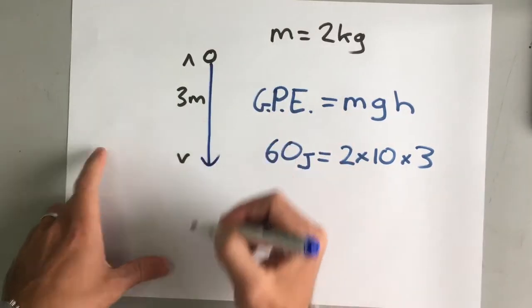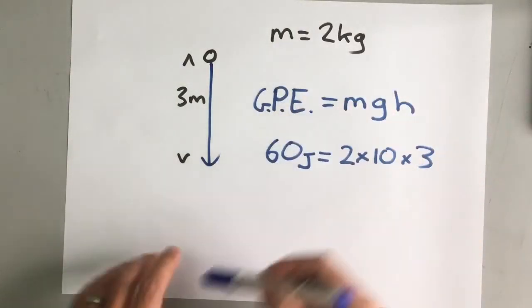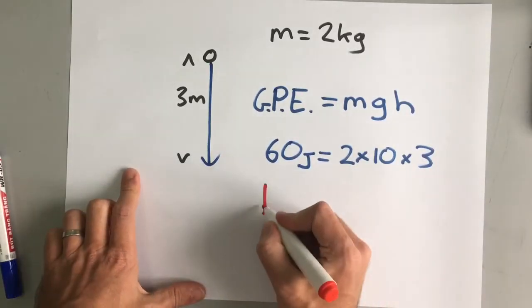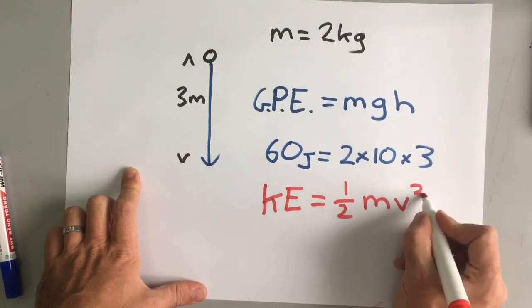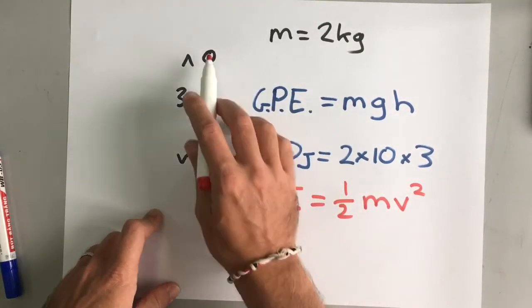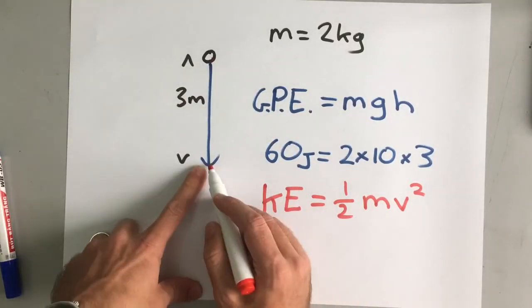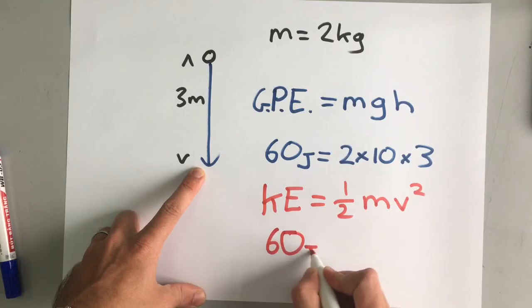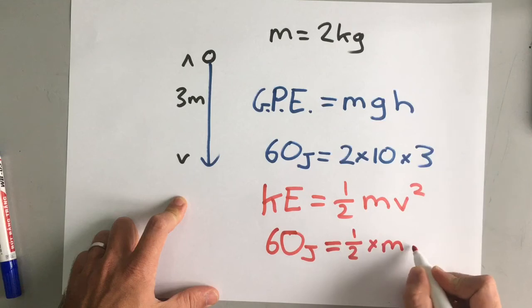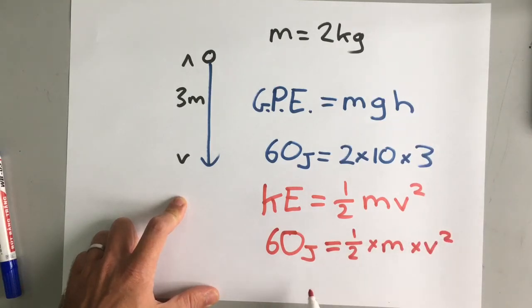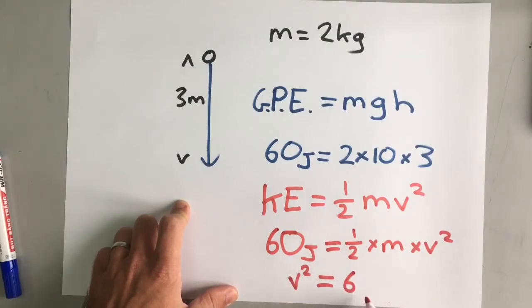Then, we drop it. All of that 60 joules is going to convert into kinetic energy. And we know that kinetic energy is half times mass times velocity squared. All of the potential energy is converting into kinetic energy. So, by the time it gets to the bottom, it's going to have 60 joules of kinetic energy. 60 joules is a half times the mass times the velocity squared, which means that velocity squared is 60 divided by a half, which is the same as times two, times the mass, which is two.